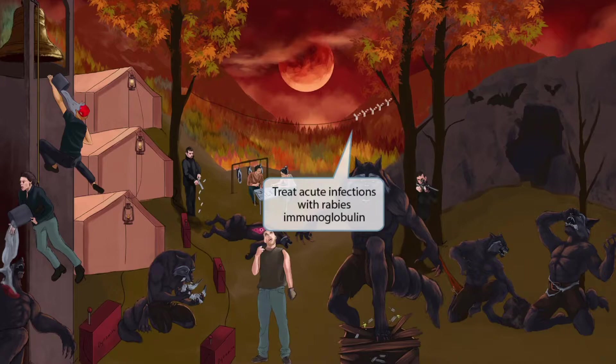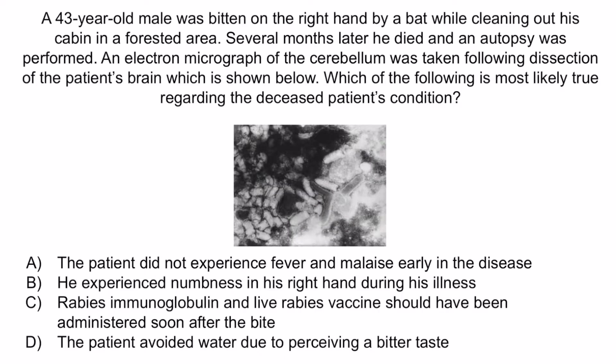Now that we've covered the image, let's do a question to apply what you've learned. A 43-year-old male was bitten on the right hand by a bat while cleaning out his cabin in a forested area. Several months later he died and an autopsy was performed; an electron micrograph of the cerebellum was taken following dissection of the patient's brain. Which of the following is most likely true regarding the deceased patient's condition? A: The patient did not experience fever and malaise early in the disease. B: He experienced numbness in his right hand during his illness. C: Rabies immunoglobulin and live rabies vaccine should have been administered soon after the bite. Or D: The patient avoided water due to perceiving a bitter taste.